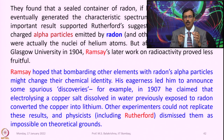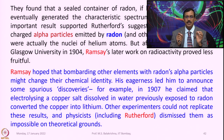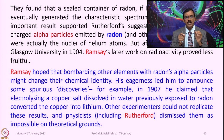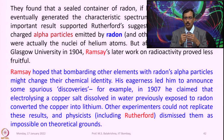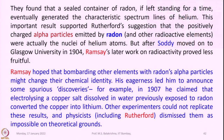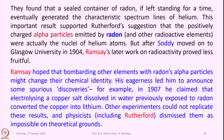Ramsey hoped that bombarding other elements with radon's alpha particles might change their chemical identity. His eagerness led him to announce some spurious discoveries. For example, in 1907 he claimed that electrolyzing a copper salt dissolved in water previously exposed to radon had converted the copper into lithium. Other experiments could not replicate these results, and physicists including Rutherford dismissed them as impossible on theoretical grounds.